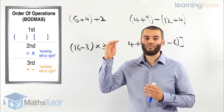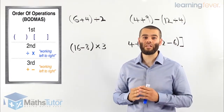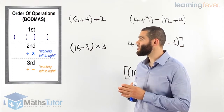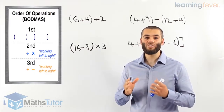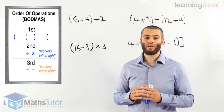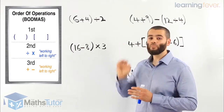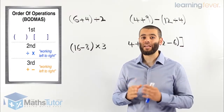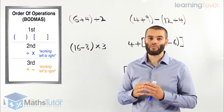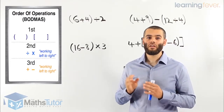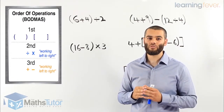So first we have the brackets, then we have the multiplication and division — we complete that second. After we complete the multiplication and division, we then move on and look for a plus or a minus: addition and subtraction, which we complete in the last stage. Always working from left to right, and you're going to see throughout the examples how we're going to solve them.